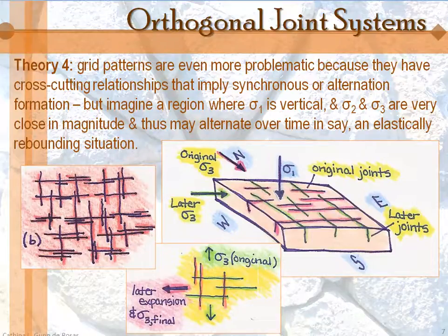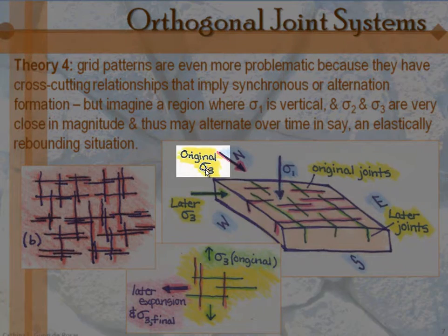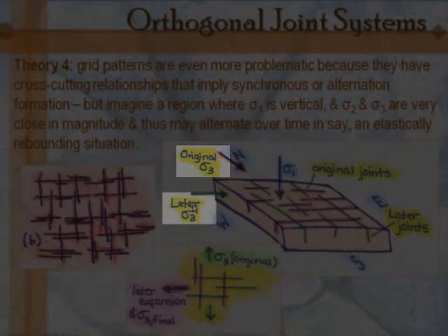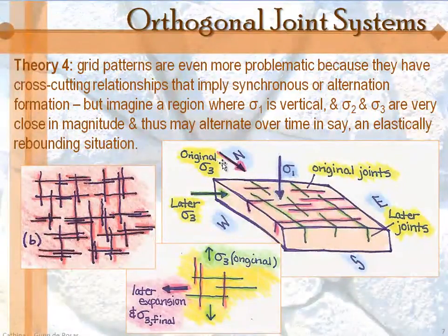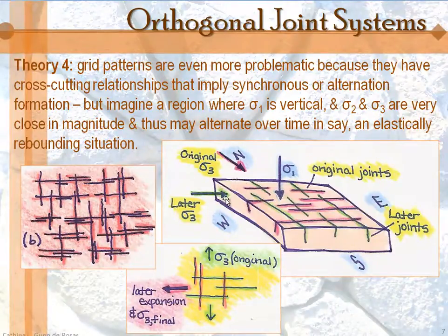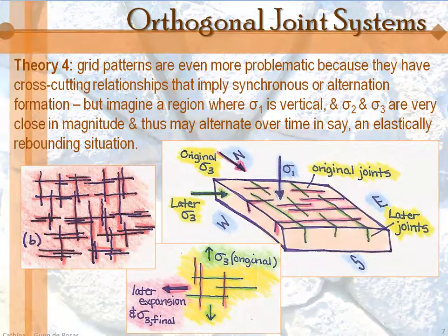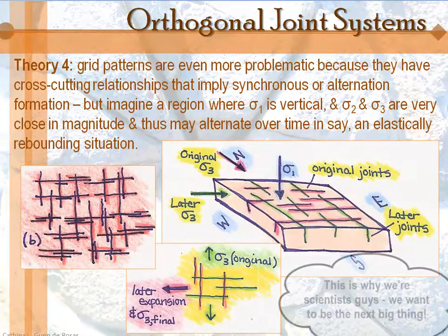Consider a region where sigma-1 is vertical and sigma-3 and sigma-2 are very similar in magnitude — here I've labeled them both sigma-3, showing the original orientation and the later orientation. Over time, with the rock behaving nearly homogeneously, at some times the orientation may be stronger in one direction and those joints develop, and then stronger in the other direction and those joints are worked on. That is one theory for how you could develop a grid pattern.